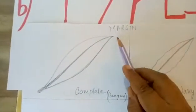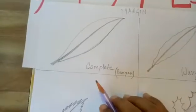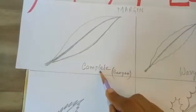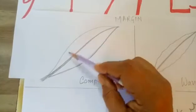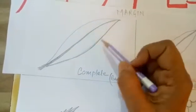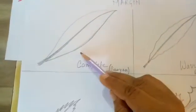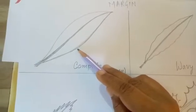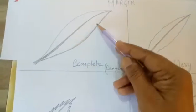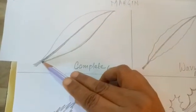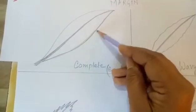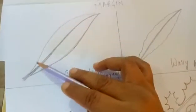Now, let us see how according to the margin, we have classified the leaves. First one is complete. Complete means the margin has no design. The margin has no design. Margin, what is the meaning of margin? Margin means the side of a leaf. It is called margin. The very side of the leaf is called margin.